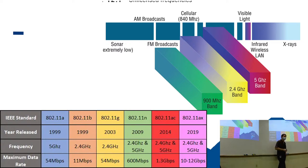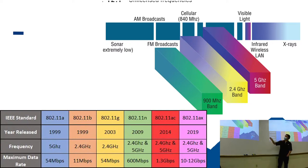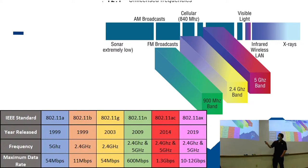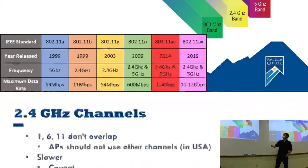Just to understand the frequencies: sonar is very low frequency, X-rays are very high frequency, and visible light is in between. Wi-Fi signals are above cellular and below visible light — you can't see Wi-Fi. 900 megahertz isn't really used for Wi-Fi; it's used for various IoT standards like Z-Wave. Typically we're talking about 2.4 gigahertz to 5 gigahertz for Wi-Fi.